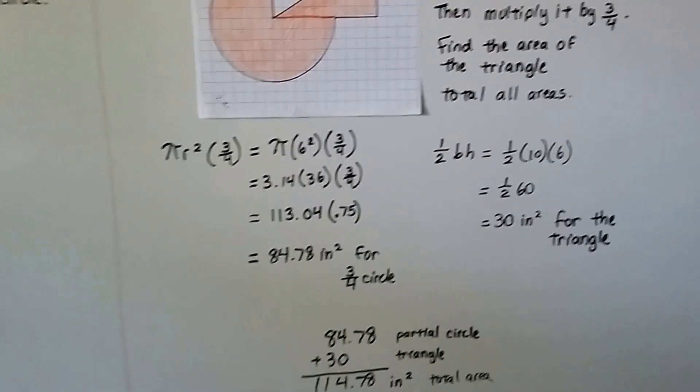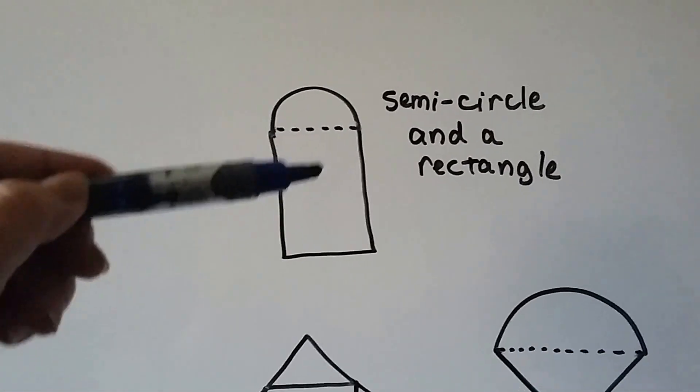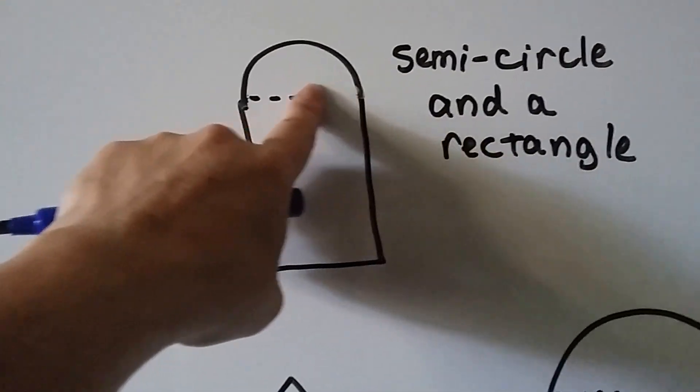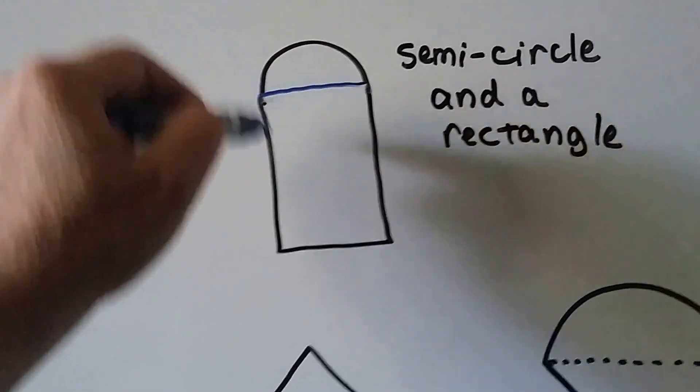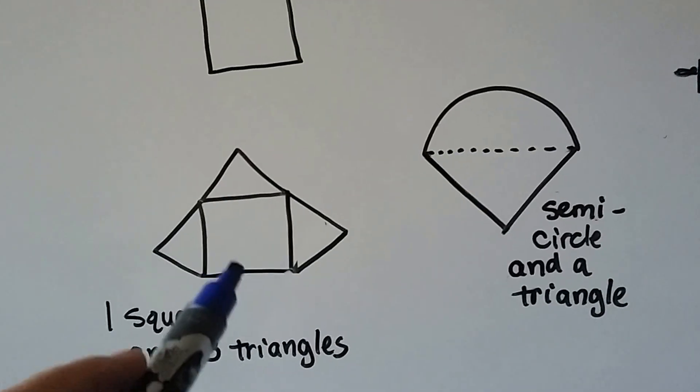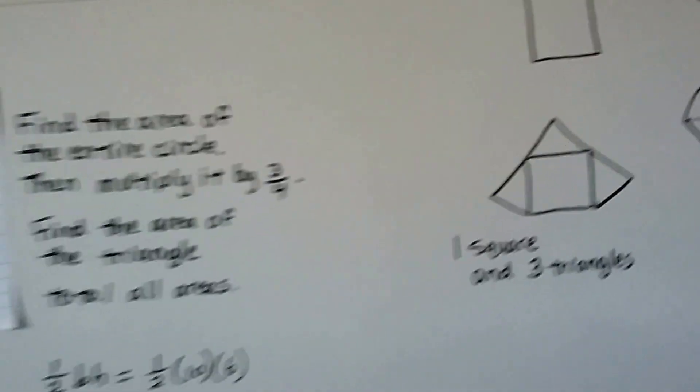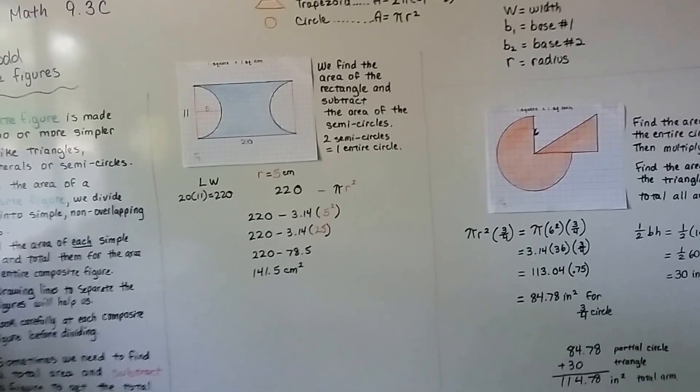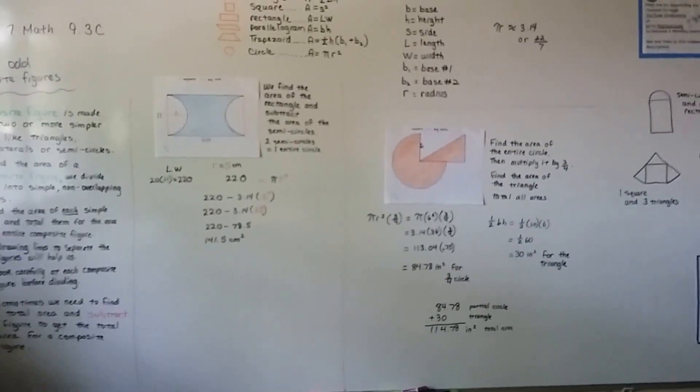If you come across a composite figure, think of this as a rectangle and a semicircle. You could do the semicircle and a rectangle, you could do a semicircle and a triangle, you could do three triangles in a square. Just figure out where you can break it apart and split it into two or three or four different shapes that you can find the area, and then add those totals when you're done.